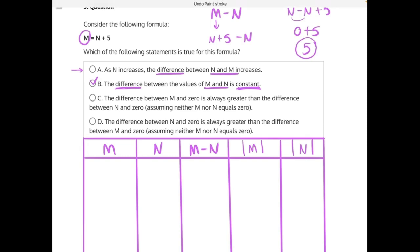And the easiest way to do that is to try plugging in different values for our variables M and N. So let's try with this first statement, answer choice A. As N increases, the difference between N and M decreases. So let's try plugging in increasing numbers of N.